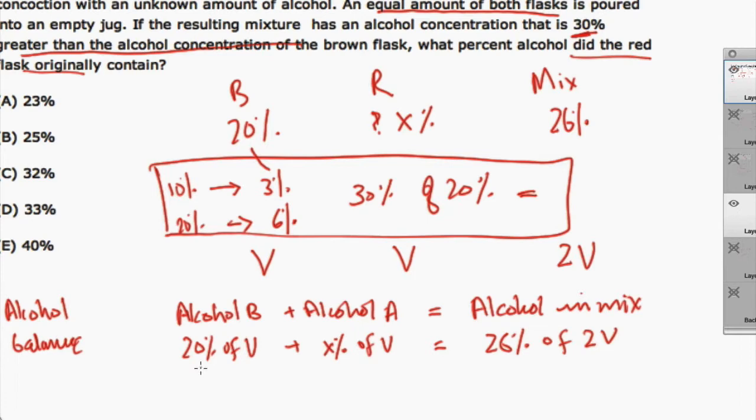So we can take out the percent signs. We'll have 20 over 100 times V plus X over 100 times V equals 26 over 100 times 2V. Now, 100 is common across every term in this equation. So you can cancel it out. Also, V is common in every term. So I can cancel out V. So what I am left with is 20 plus X equals 2 times 26, which is 52. So my X comes out to be 52 minus 20, which is 32.